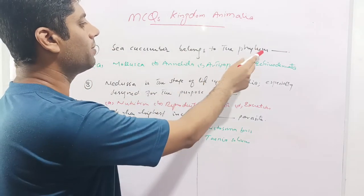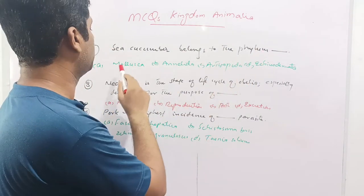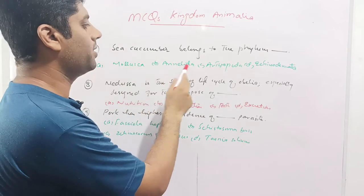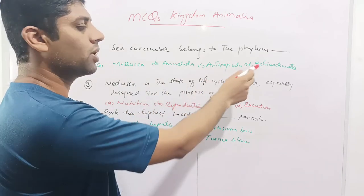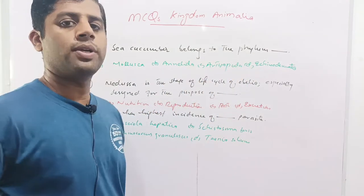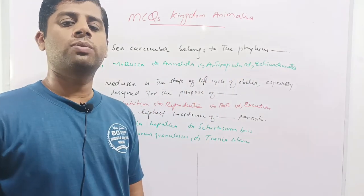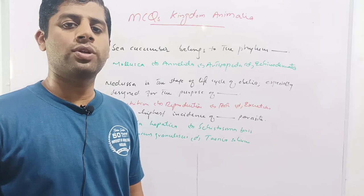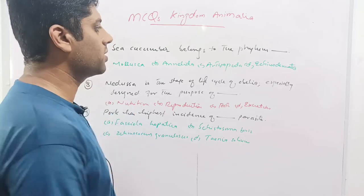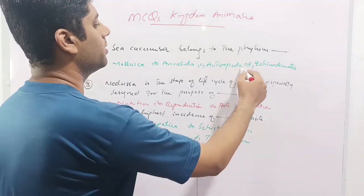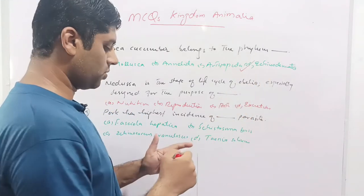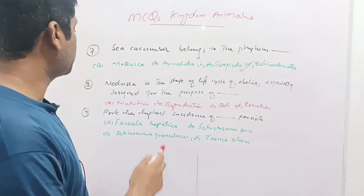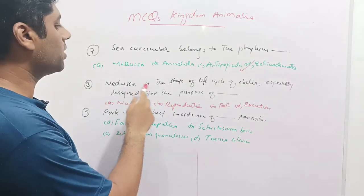Next is a simple question: sea cucumber belongs to which phylum? Given options are Mollusca, Annelida, Arthropoda, or Echinodermata. Sea cucumber and starfish both belong to phylum Echinodermata, so option D is correct.